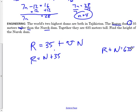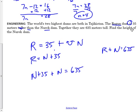Rogan Dam plus the Nurek Dam equals 635. So I can substitute N plus 35 in for R. So what I'm going to have is N plus 35 — that stands for the Rogan Dam — plus N, that's the Nurek Dam, equals 635. R stands for N plus 35, so instead of using R, I just use N plus 35. That way I just have one variable, and I know I can solve it. Now when I simplify this, I have two Ns, so I can say 2N plus 35 equals 635.